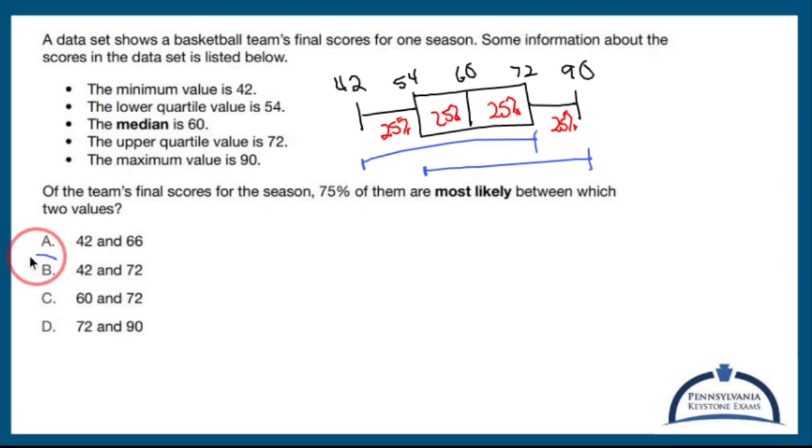That is B. That's the only answer that makes sense because 42 lives right here, 72 lives right there. 25% plus 25% plus 25% is going to give me 75%. B is the answer. Not pleasant, but that's how you do it.